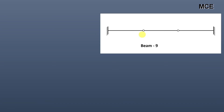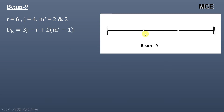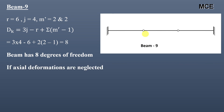For beam nine, there are six reactions, four joints, and two internal hinges. The number of members meeting at both internal hinges is two each, so m′ = 2 and 2. The value of dk = 8, meaning the beam has eight degrees of freedom. There is one member in the beam, so if axial deformations are neglected, dk = 8 − 1 = 7.